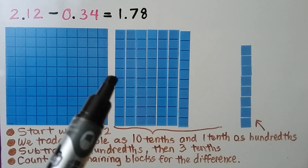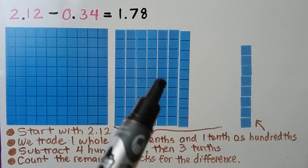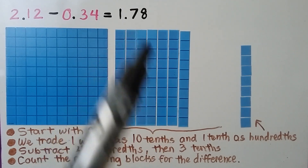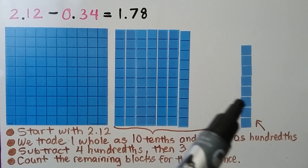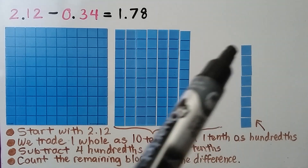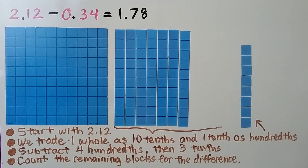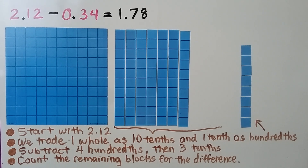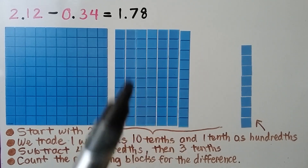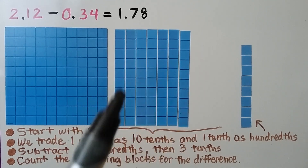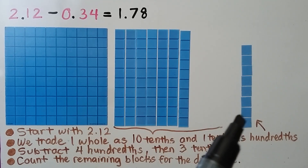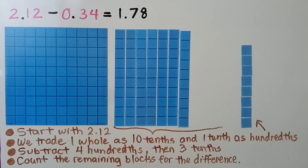We have 1 whole, 7 tenths, and 8 hundredths. The difference is 1 and 78 hundredths. To solve this using base 10 blocks, we had to regroup twice: we had to change one whole into 10 tenths, and we had to change a tenth into 10 hundredths.